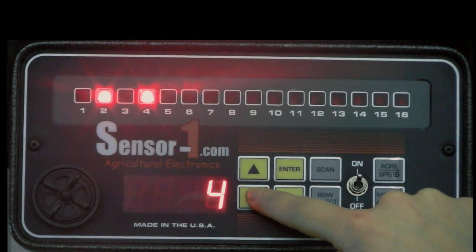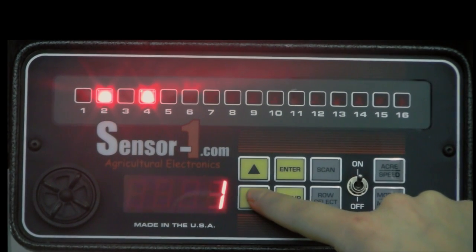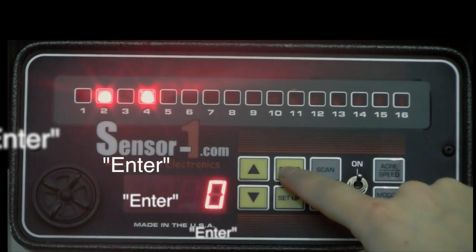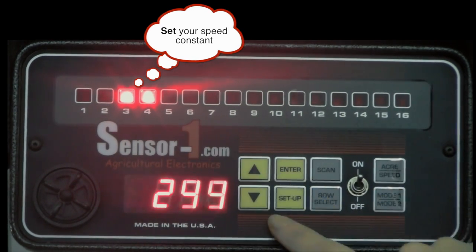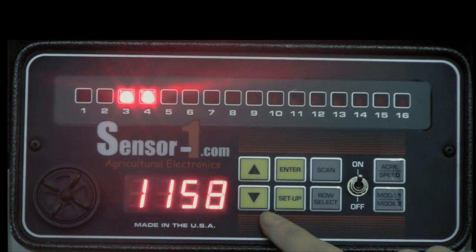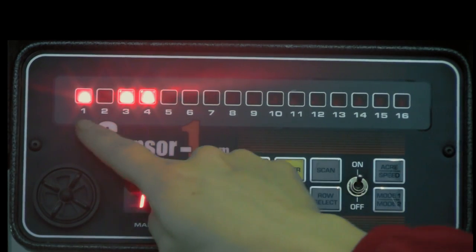When lights 3 and 4 are on, prepare to set your speed constant. A 200 foot distance is required for this step. Press the up arrow key as you pass your first marker and then the down arrow key when you pass your second marker. Press enter to save and proceed to the next step.